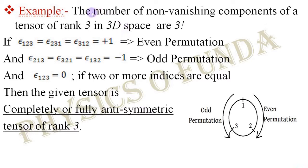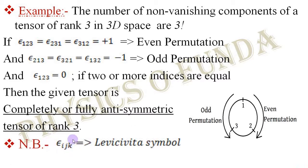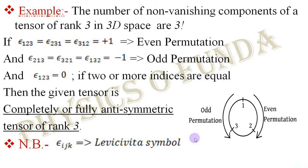Here we considered a tensor of rank 3 as an example, so this is a completely or fully anti-symmetric tensor of rank 3. The notation ε_ijk is generally called the Levi-Civita symbol — this is just for information. Now, why do we learn all this? Of course, these have applications — let us see that in the next slide.